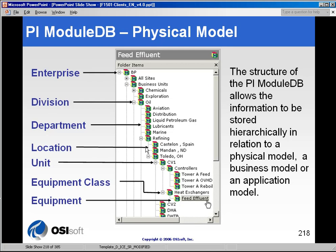You can build this out in any structure you want. You can use your organizational structure, build it out by process, by location, or by product line. The module database structure is completely independent of anything else — you can build it out in the way that is most conducive to you, and then tie tags, aliases, and properties to each of these modules.